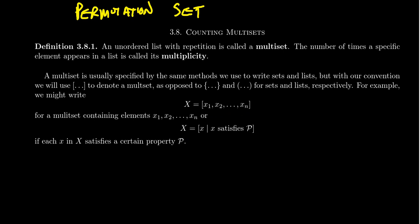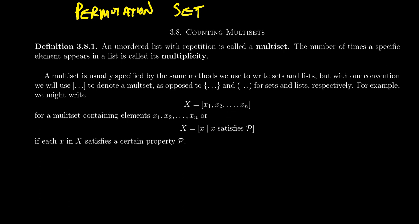We could also describe a multi-set using the usual set builder notation: X equals all elements x such that x satisfies some property. It's unordered, so the order in which you list them doesn't make a difference. But it's also possible that these x's could represent different representations of the same element, and therefore they could satisfy the property more than once and thus be included in the multi-set more than once.